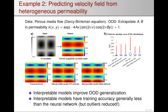The second example predicts the velocity field from heterogeneous permeability — an image-to-image task on a porous media flow problem. Permeability is defined through an equation with coefficients a and b; extrapolating those produces the out-of-distribution data. The interpretable models improve generalization, reducing errors compared to the neural network. In the training regime, the interpretable models are not as accurate as the neural network, but they reduce outliers and provide reasonably good accuracy.